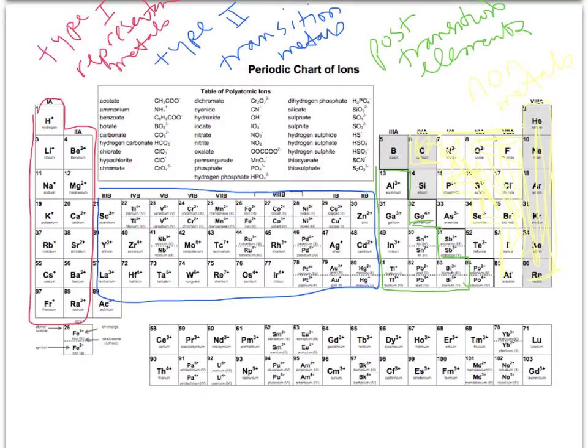For the formation of ionic compounds, it's either going to be between a Type 1 metal and a nonmetal, a Type 2 metal and a nonmetal, or a post-transition element and a nonmetal. In general, it's metal and nonmetal — but there are three different types: representative, transition, and post-transition.